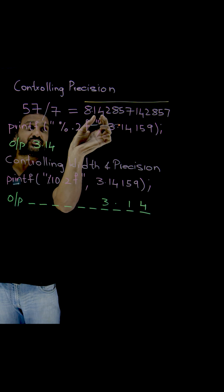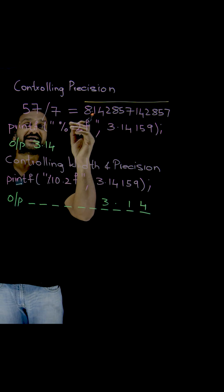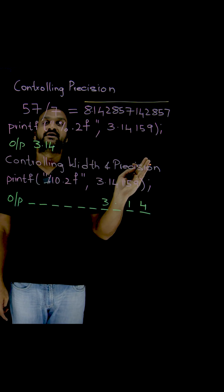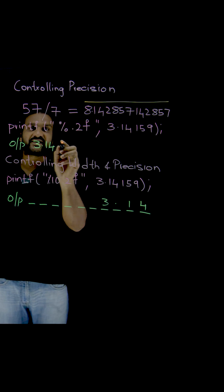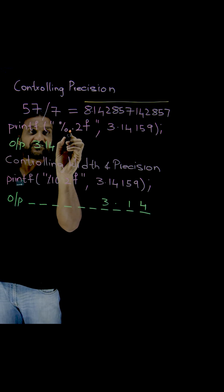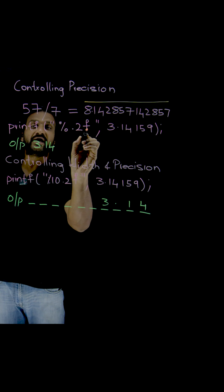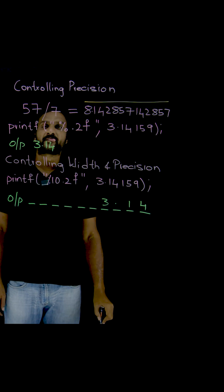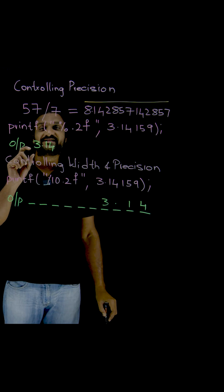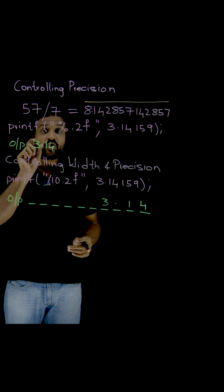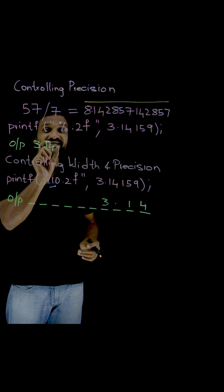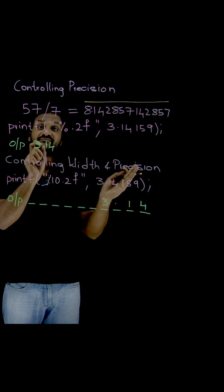I want only two values to be printed after the decimal. How can I do that? This is how the precision can be controlled. Percent 0.2f. The 0.2 states that the precision should be only two decimals, two digits after the decimal point.